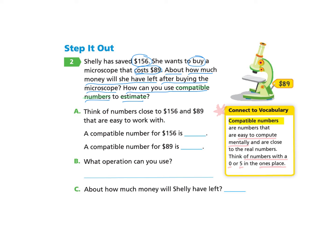Part A. Think of numbers close to 156 and 89 that are easy to work with. This might be a good time for you to pause and think about what is a compatible number for 156, and what is a compatible number for 89?